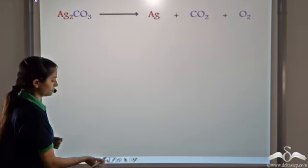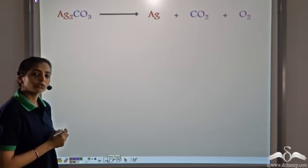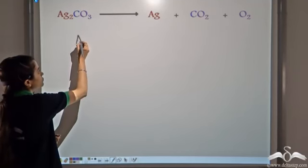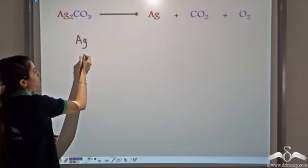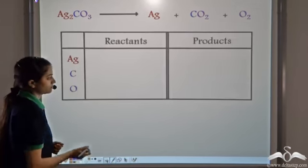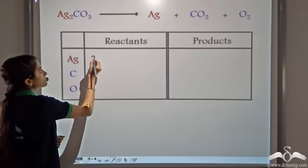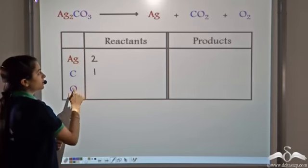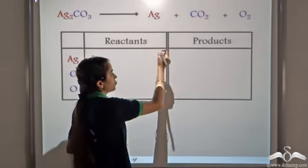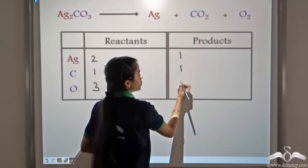Let's look at another example. We have Ag₂CO₃ → Ag + CO₂ + O₂. Let's write the atoms: Ag, Carbon, and Oxygen. On the reactant side: 2 Silver atoms, 1 Carbon atom, and 3 Oxygen atoms. On the product side: 1 Silver atom, 1 Carbon atom, and 2 + 2 = 4 Oxygen atoms.